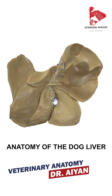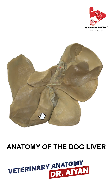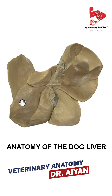Going from the right side to the left, the first structure you will find in the middle is the gallbladder. After the gallbladder, toward the left side, the first lobe you will find is the quadrate hepatic lobe.